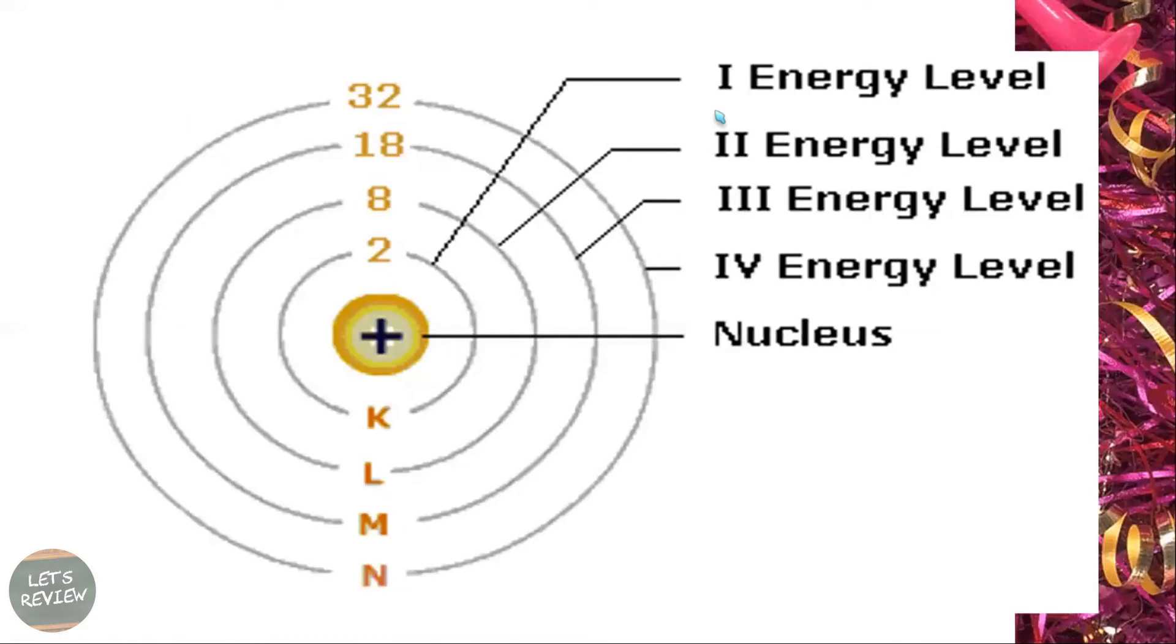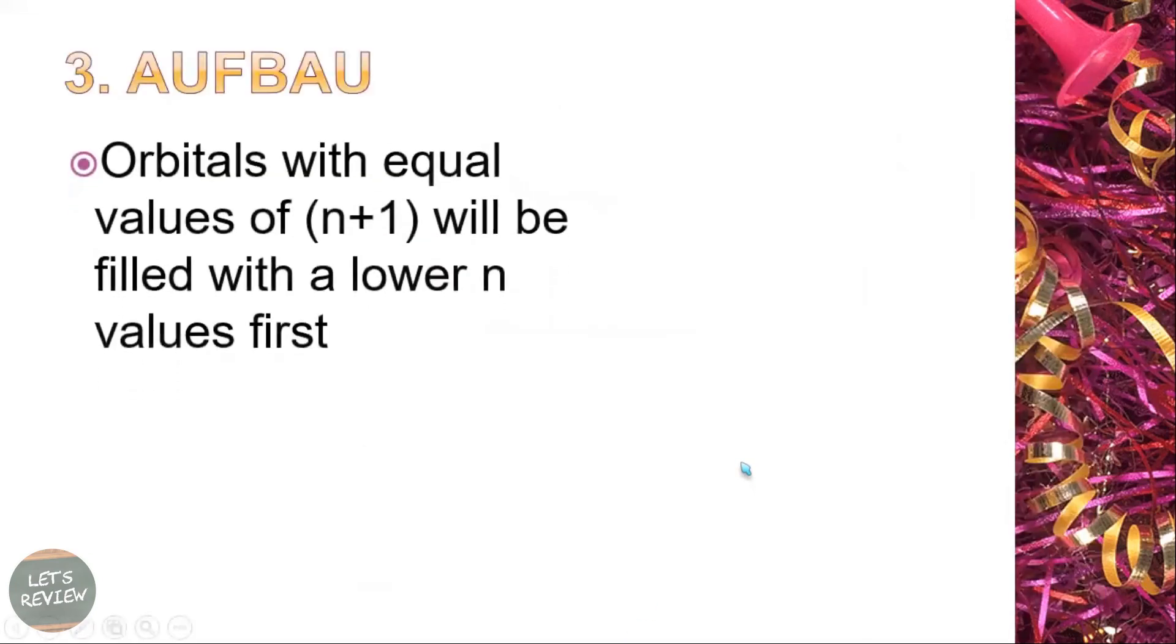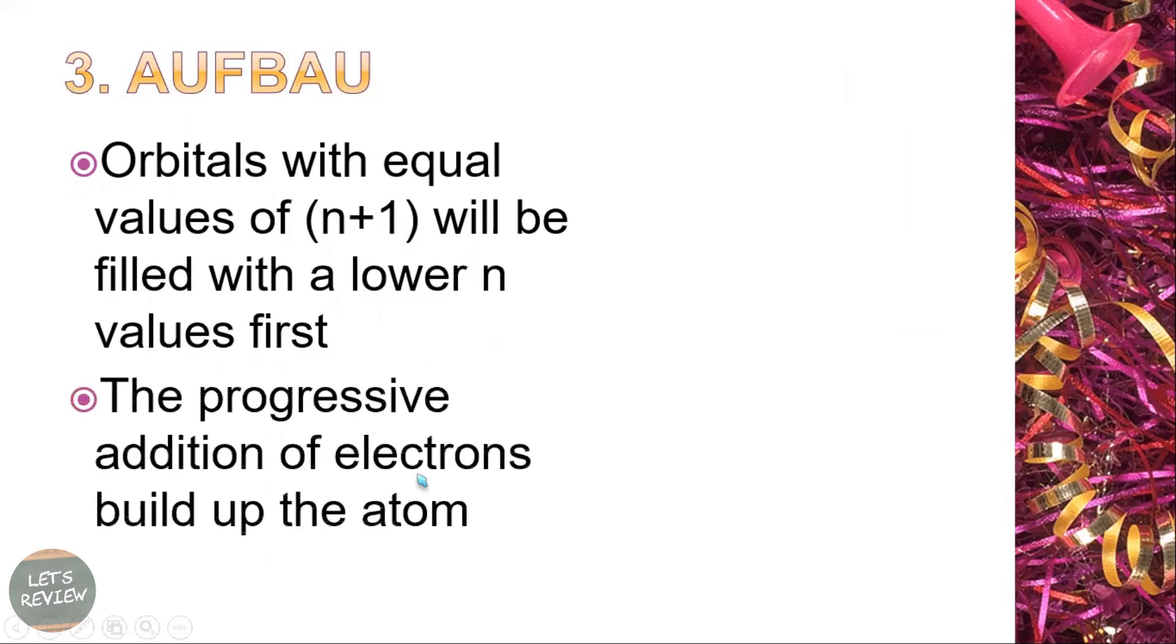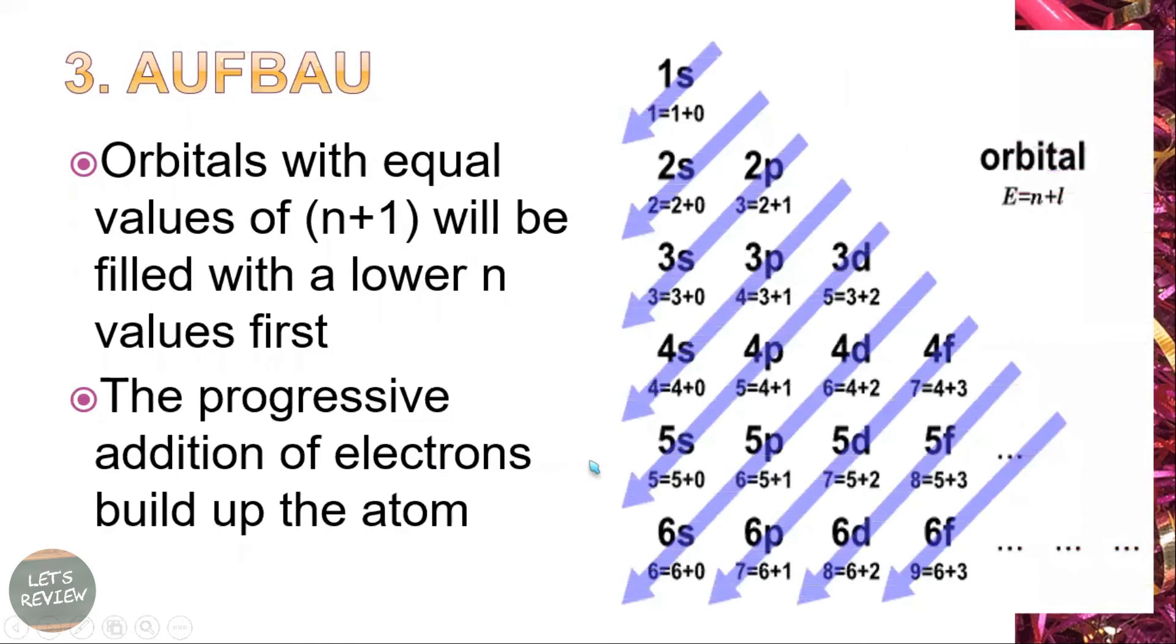So if you're going to take a look of this example diagram, remember that the first orbit can hold, this is the nucleus where you can find the proton and the neutron if there's neutron. The first orbital, remembering Pauli's, can only hold two, or the maximum number of electrons it can hold is two. That is for the first energy level. And the second is eight, and the third is 18, and in the fourth 32, if there's fifth that would be 50. Orbitals with equal values of n plus 1 will be filled with the lower values first. So the progressive addition of electrons built up the atom.